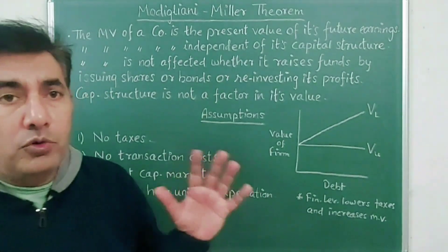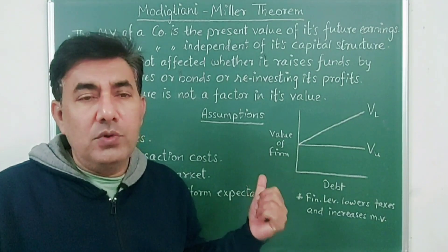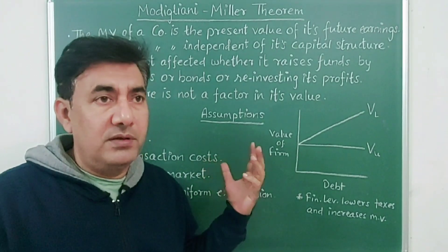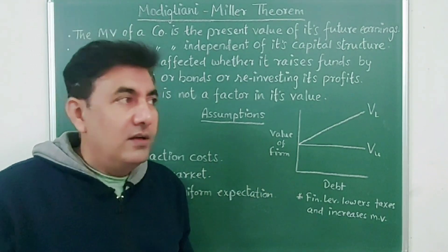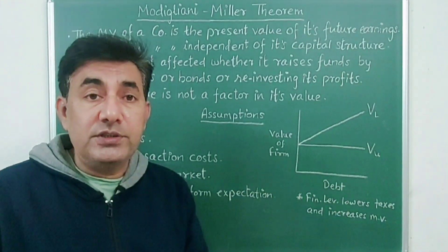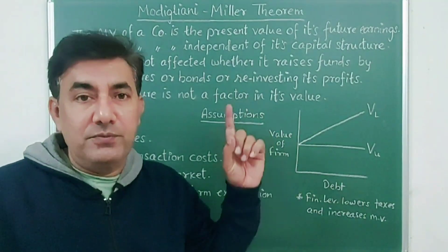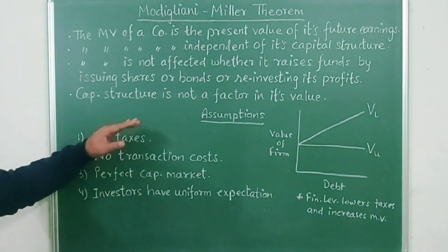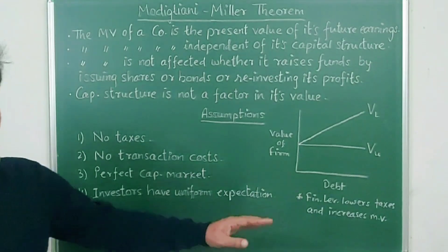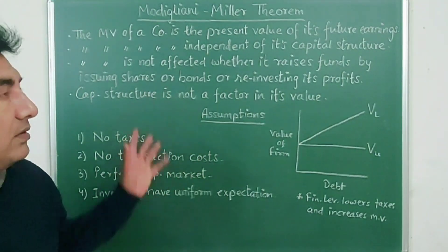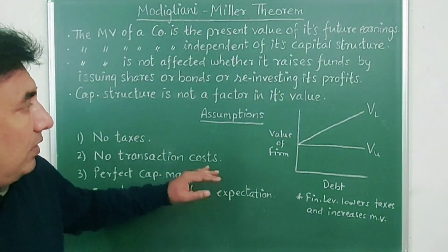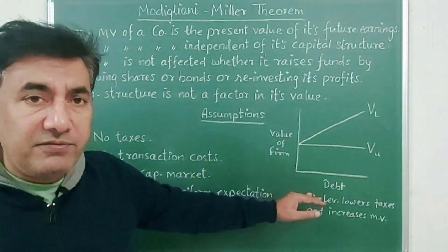The fourth key sentence: capital structure is not a factor in a company's value — it doesn't decide the market value of the company. These four sentences define the Modigliani-Miller theorem, also known as MM Proposition 1. This theory was put forward way back in the 1950s, so it is a very old theory. It has two parts: MM Proposition 1 and MM Proposition 2. Proposition 1 assumes there are no taxes, no transaction costs, the capital market is perfectly competitive, and investors have uniform expectations.